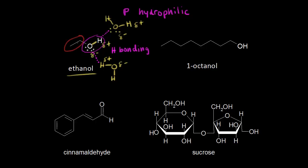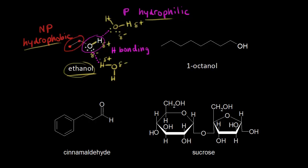Looking at the other portion of the ethanol molecule on the left, we have a CH2 and a CH3 — carbons and hydrogens, which are nonpolar. So this region is nonpolar and doesn't like water — we call this hydrophobic, or water-fearing. We know that ethanol is soluble in water from experience, so that must mean this hydrophobic region doesn't overcome the hydrophilic region. The polar region of the ethanol molecule is enough to make ethanol soluble in water.